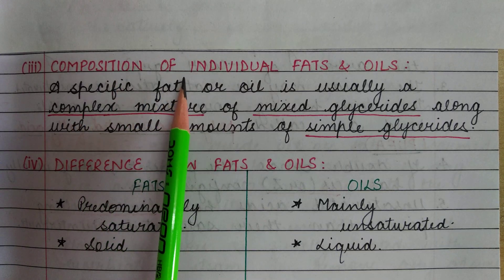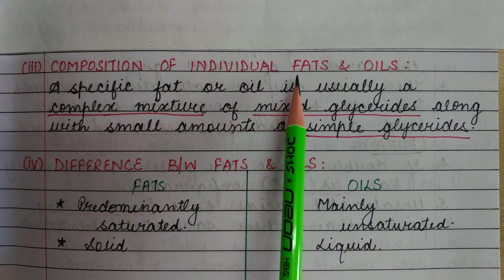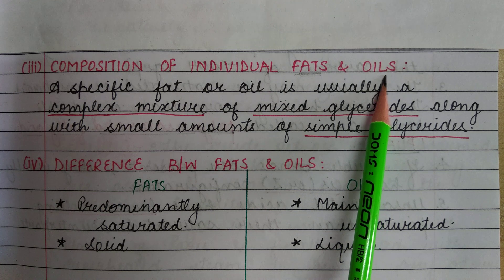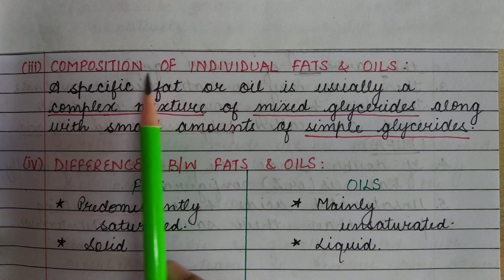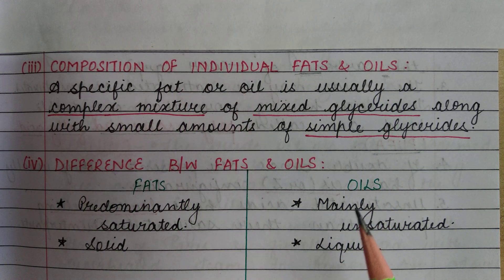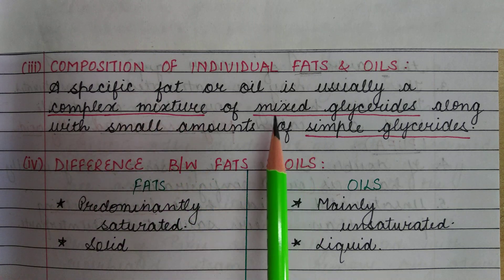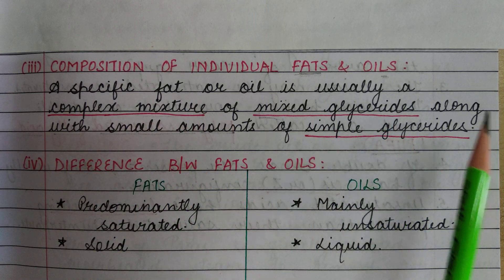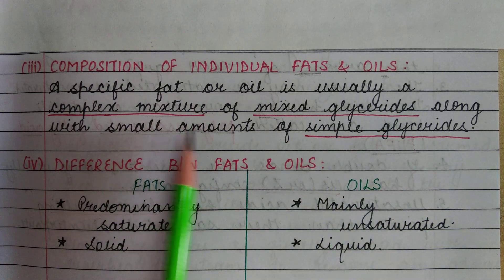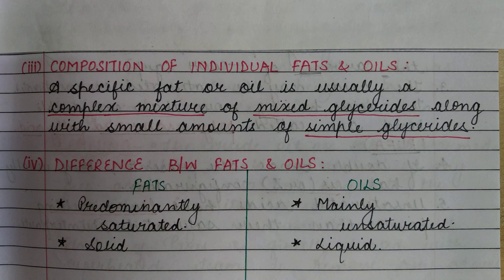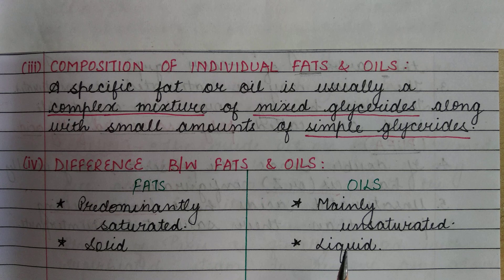Regarding the composition of individual fats and oils: a specific fat or oil is usually a complex mixture of mixed glycerides along with small amounts of simple glycerides. That means mostly it is a mixture with different R groups, and only some simple glycerides are also present.